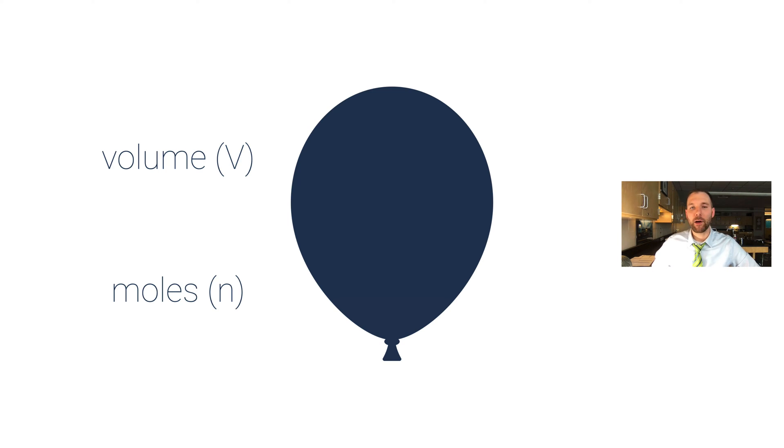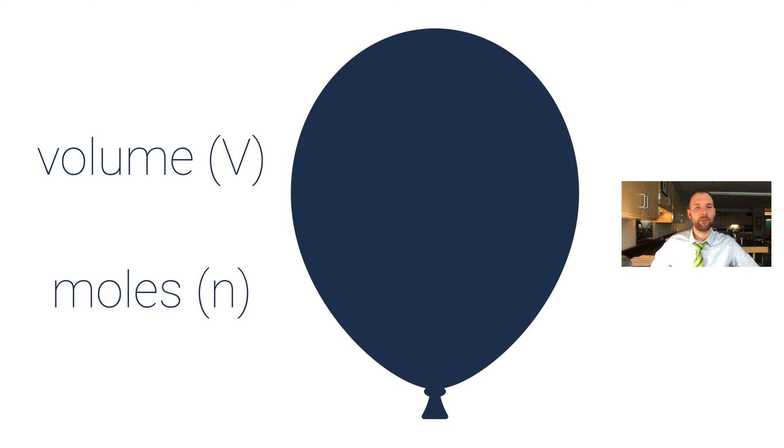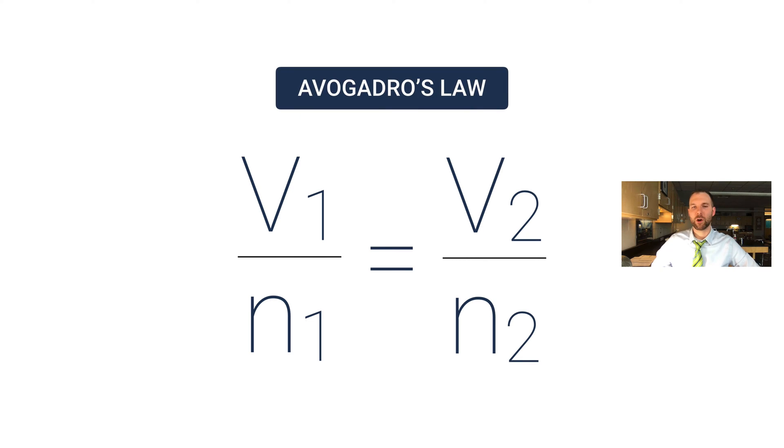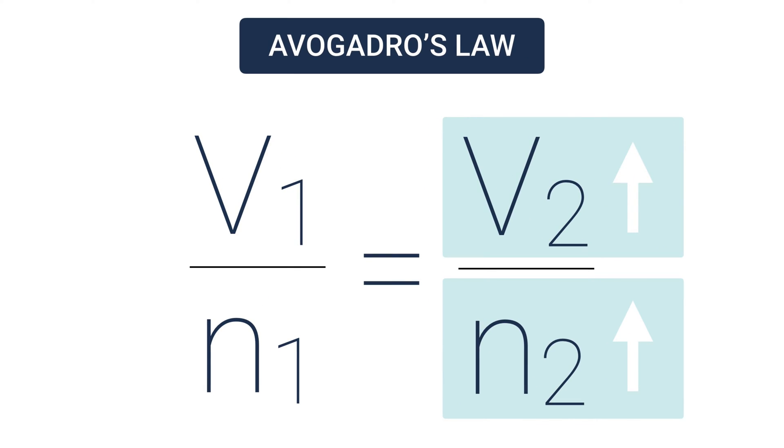This is essentially what Avogadro's law is saying—that volume and moles are directly related to each other. They're proportionately increasing or proportionately decreasing, and this algebraic representation matches that relationship.